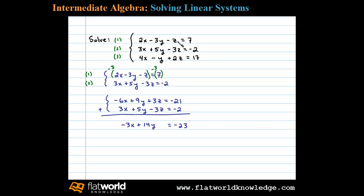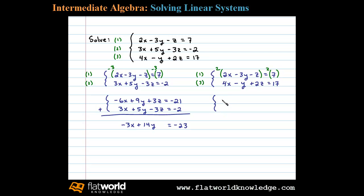Using these equations we can eliminate the variable z. If we multiply both sides of the first equation by 2, that'll give us an equivalent system: 4x minus 6y minus 2z equals 14. We can see the variable z is lined up to eliminate.